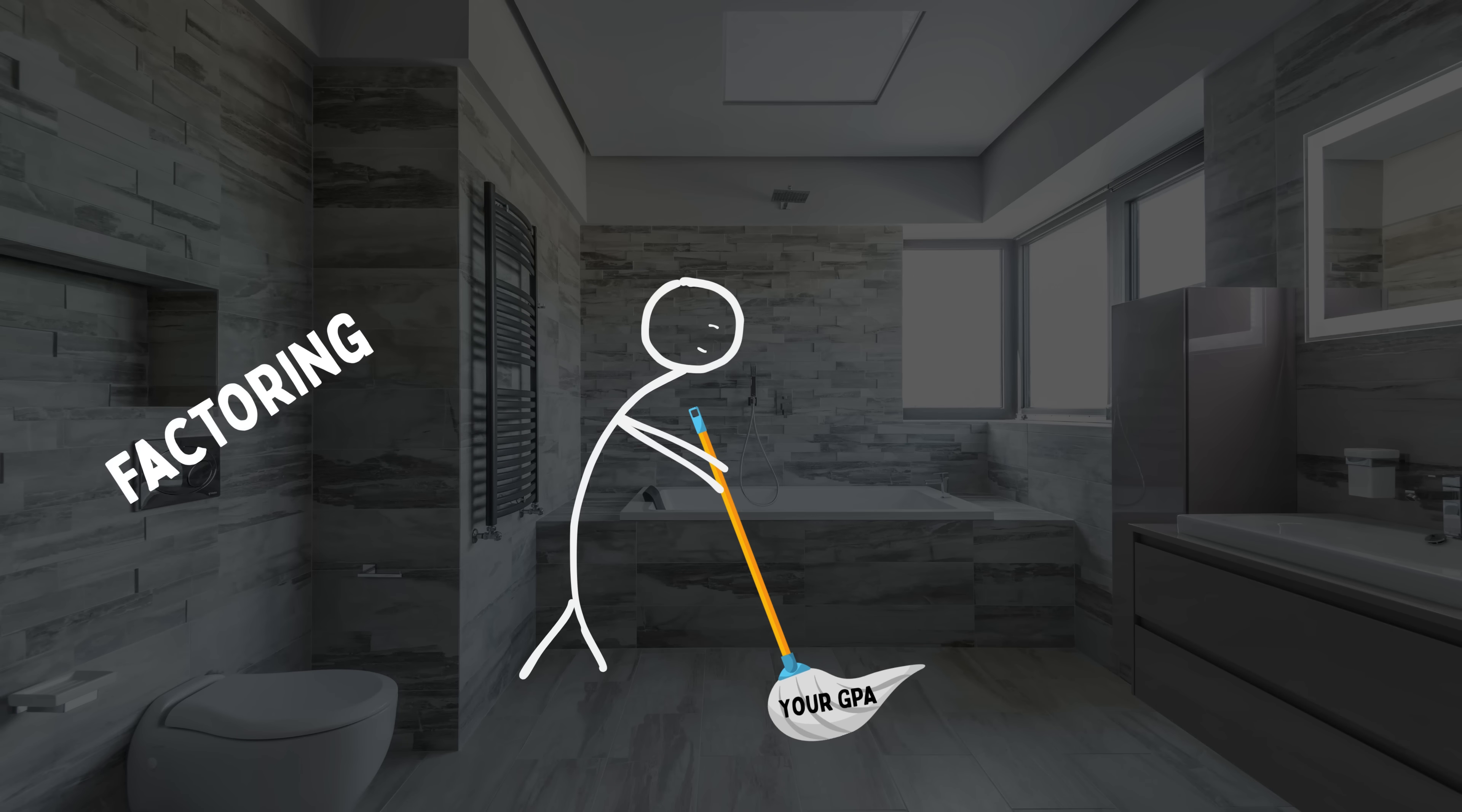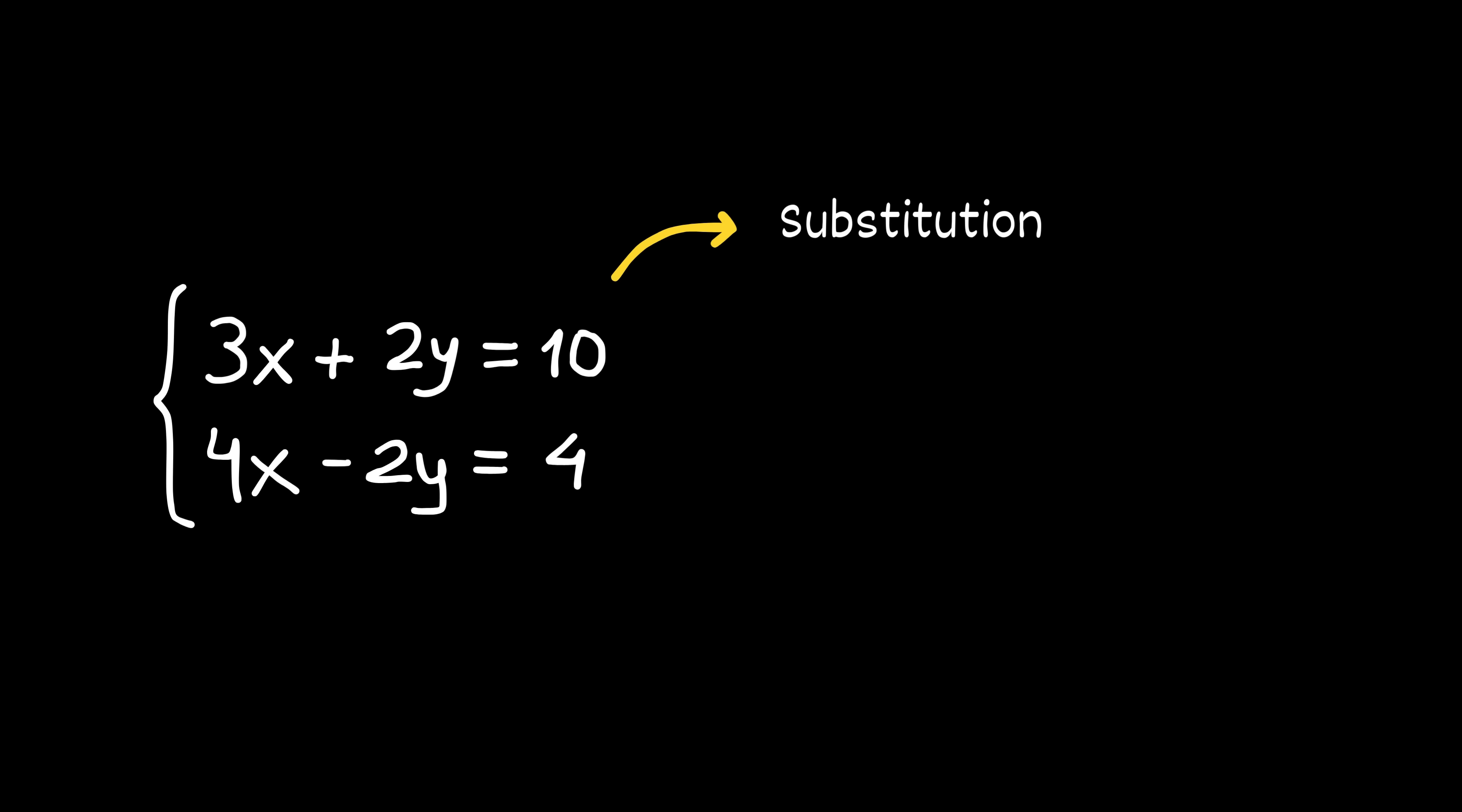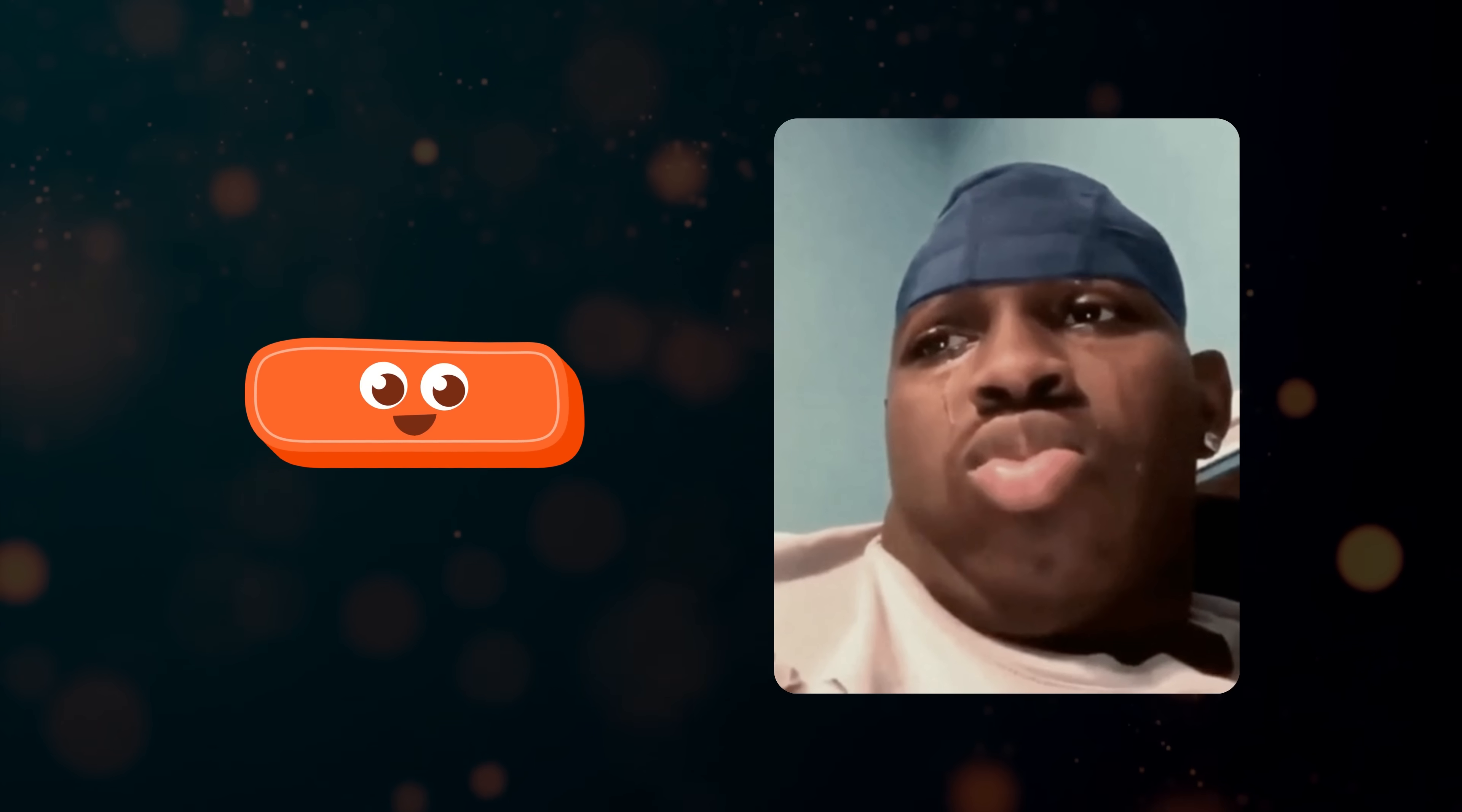Factoring, quadratic formula, completing the square, they do it all. Then they'll solve a system of equations using substitution, elimination, and matrices just for fun. They'll find the area of a triangle with the basic formula, then with trigonometry, and then Heron's formula just to flex. Meanwhile, you're over here crying because you had to flip the minus sign and your world fell apart.